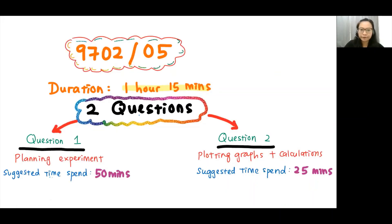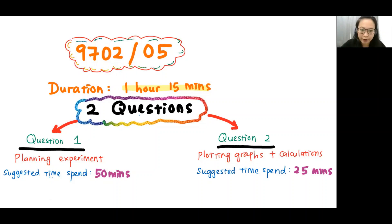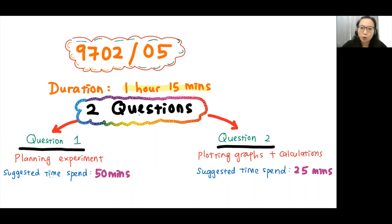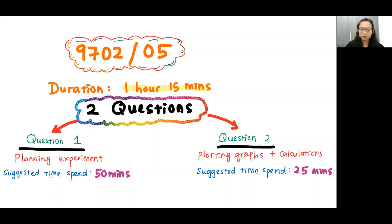The duration of paper 5 is 1 hour 15 minutes and you have two questions. The first question is the planning experiment, which carries 15 marks, and the second question is about plotting the graph. All the data and readings are given. You are supposed to plot the graph, do some calculations on areas and uncertainties, plot the best fit graph and the worst fit graph, and find your error bars.